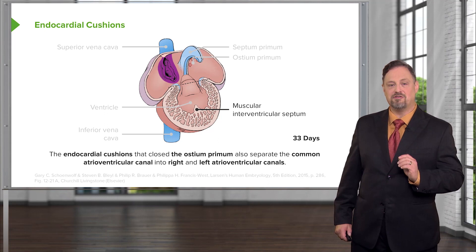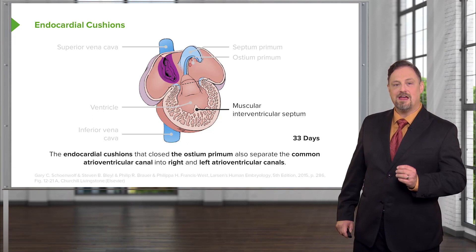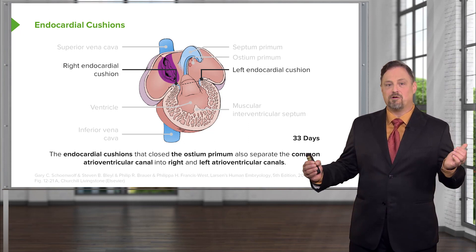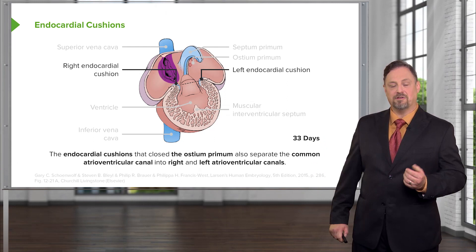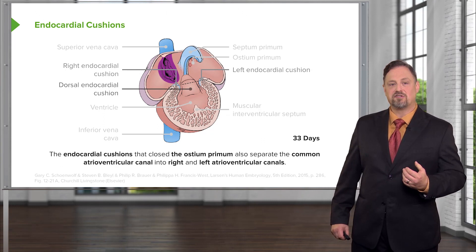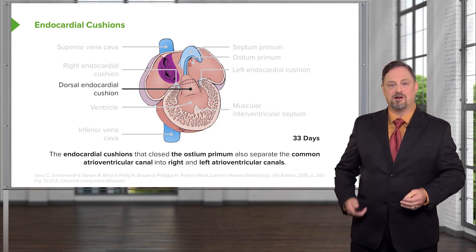We have endocardial cushions on the right and left side — a right and left endocardial cushion — and they're going to be pinching together and narrowing the space through which the atria and ventricles are communicating. Dorsally and ventrally, we can't see the ventral one because the front ventral half of the heart has been removed, but we have a dorsal and ventral endocardial cushion growing closer together to occlude the midline portion of the atrioventricular canal.